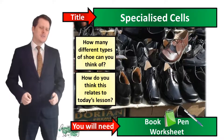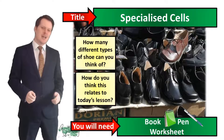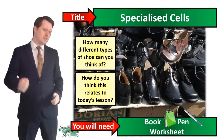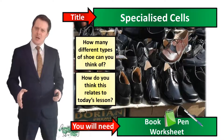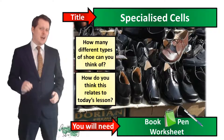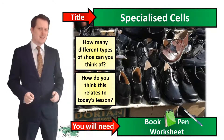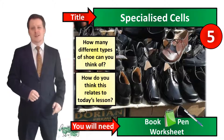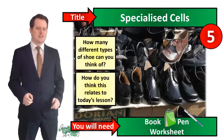In your books I would like you to write down today's title, which is Specialized Cells. For your starter activity, I would like you to think of as many different types of shoe as you can, and also think about how this might relate to today's lesson. I'm going to put five seconds on the clock, and if you need more time pause the video, and when you're finished we'll go through the answers together.